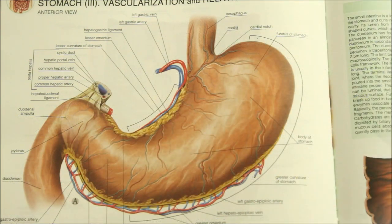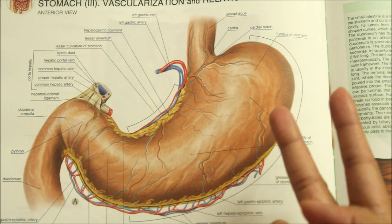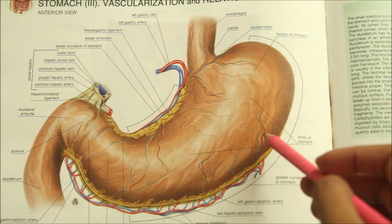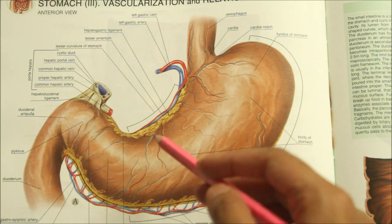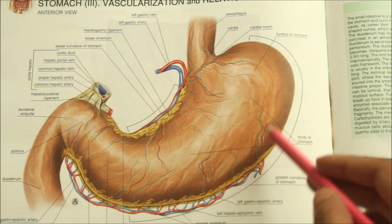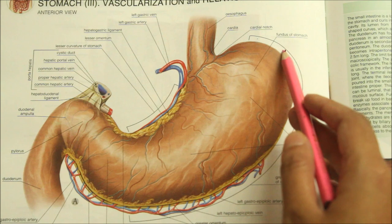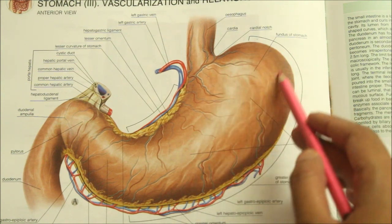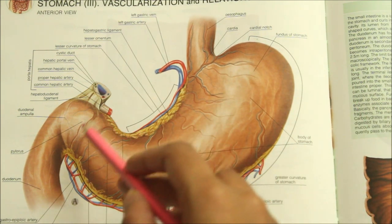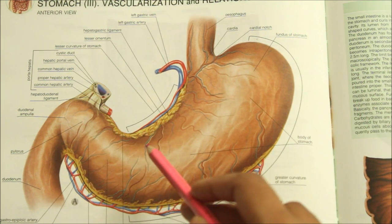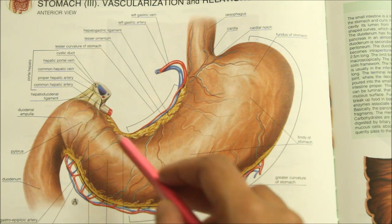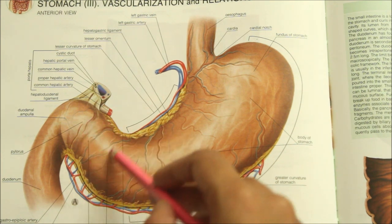The stomach has two parts: the cardiac part and the pyloric part. The larger cardiac part is further subdivided into a fundus and a body. The smaller pyloric part is subdivided into the pyloric antrum and the pyloric canal.